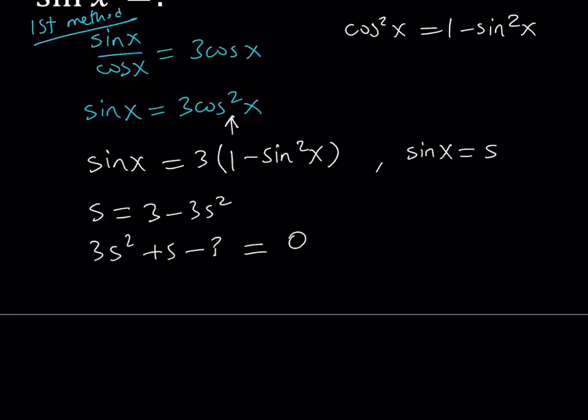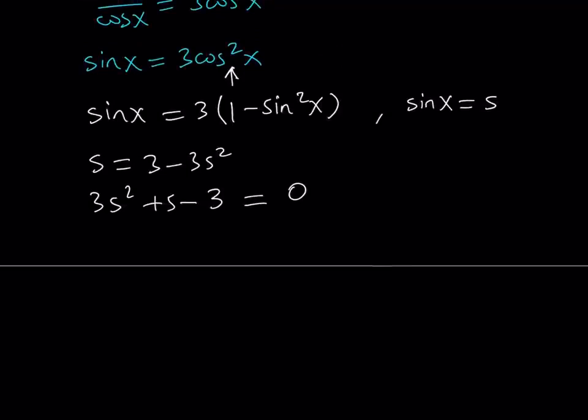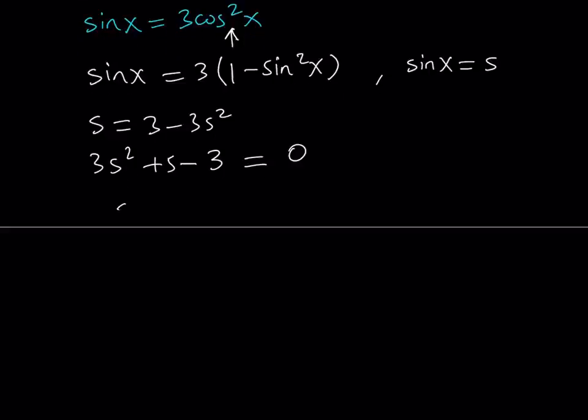So this is a quadratic equation. And we can easily solve it by using the quadratic formula. Or we can try factoring as well if it's factorable. I don't think it's factorable. So let's go ahead and just use the quadratic formula. Okay. If you use the quadratic formula, s is what we're looking for. Remember, s is equal to sine of x. So s equals negative b plus minus the square root of b squared, which is 1,